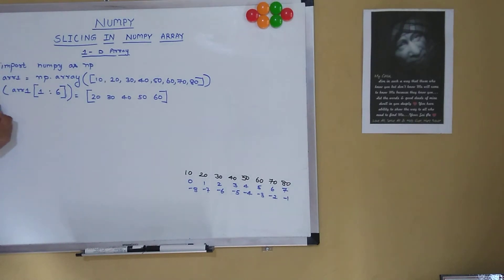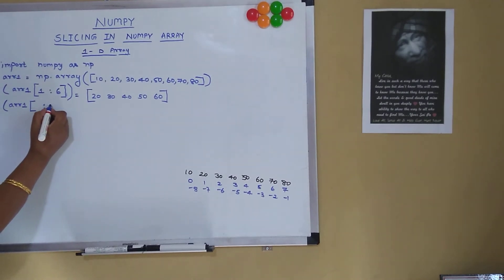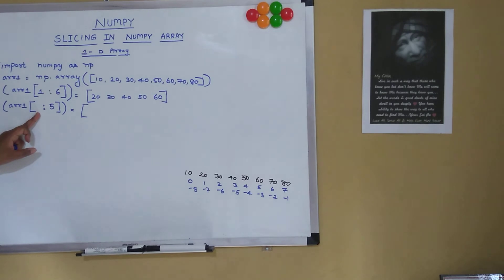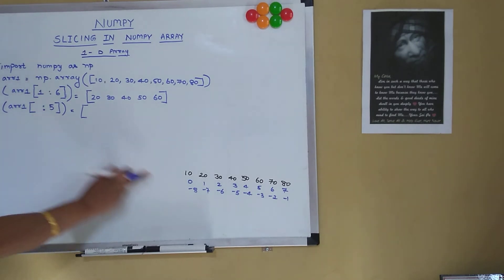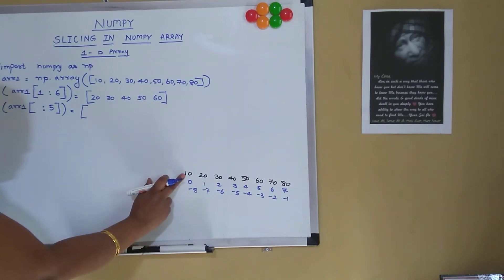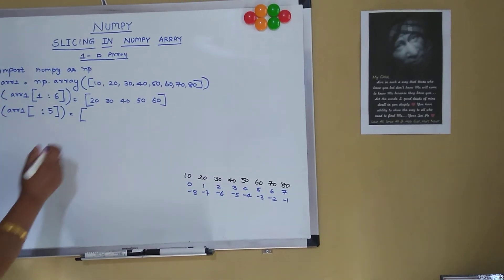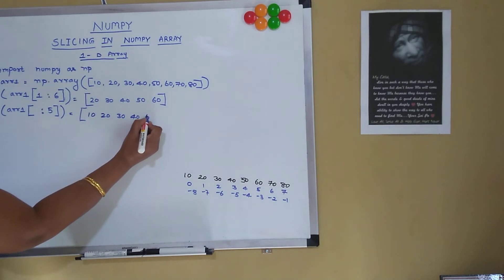Next, print array1[:5] — not specifying the start index. When we don't specify the start index, it uses the default, which is from the beginning of the array, that is index 0. So it considers from index 0 up to index 4 (5 minus 1), giving elements 10, 20, 30, 40, and 50.